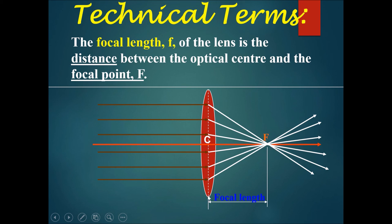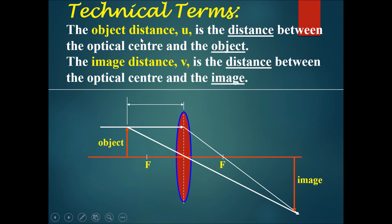Now we have two different things: the object distance and the image distance. The object distance u is the distance between the optical center and the object. So the object distance u would be this distance.